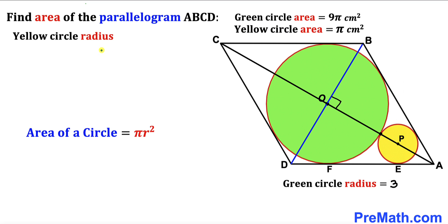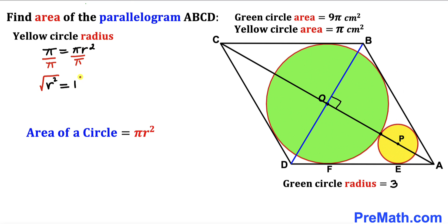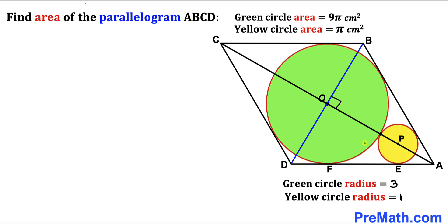Now let's calculate the radius of the yellow circle. Its area is π, so π = πr². Dividing both sides by π gives r² = 1. Taking the square root, the radius of the yellow circle is 1 cm. So the green circle radius is 3 and the yellow circle radius is 1.